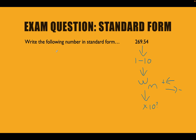Let's do the example. We're starting with 269.54. To turn this into a number between 1 and 10, we're going to have to move the decimal point to the left — 1, 2. So we've moved our decimal point twice to the left. Our new number is going to look like 2.6954. We moved the decimal point to the left, so we have a positive power of 10, and we moved it twice.